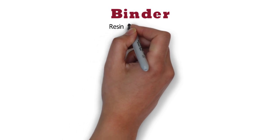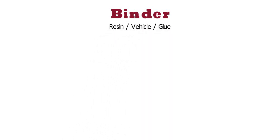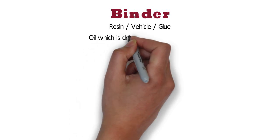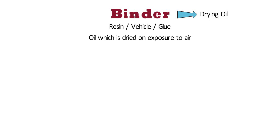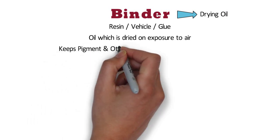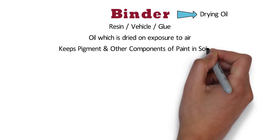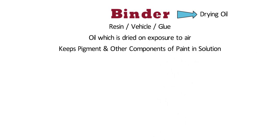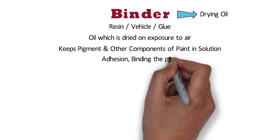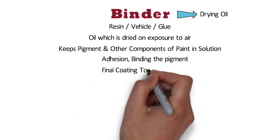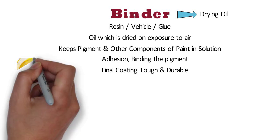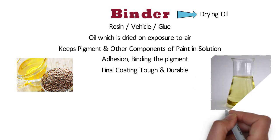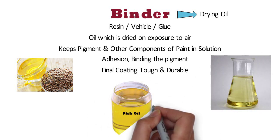The third component is binder, also known as resin, vehicle, or glue. It is actually an oil which dries on exposure to air, hence it is also called a drying oil. It has the capacity to keep the pigment and other components of the paint in suspension or solution. It is responsible for providing adhesion, binding the pigment, and also makes the final coating tough and durable. The most commonly used vehicles or drying oils are linseed oil, dehydrated castor oil, bleached oil, and fish oil.